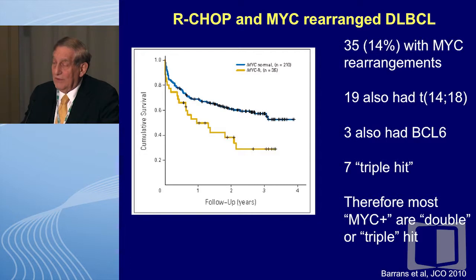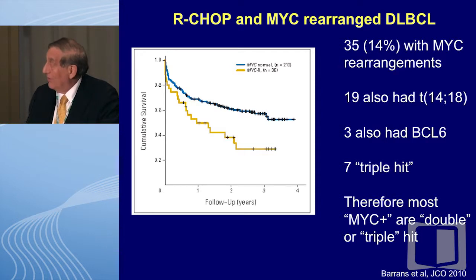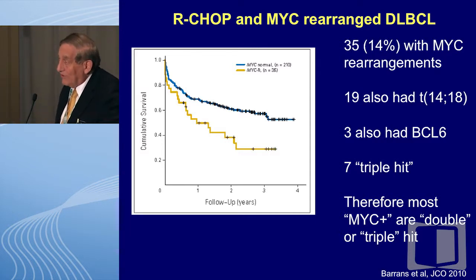In diffuse large cell lymphomas with MYC rearrangement, patients who have MYC rearrangement do a lot poorer than those who do not. This is now with the advent of R-CHOP. 14% of patients had the MYC rearrangement. Of these 35 patients with MYC rearrangement, 19 had BCL2, 3 had BCL6, and 7 had triple hit. Therefore, almost all of these MYC positives are double or triple hit — only a small percentage appear to be single hits.